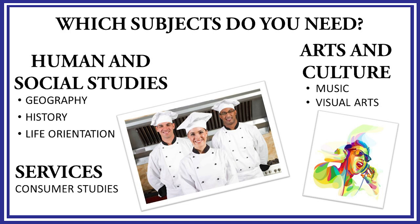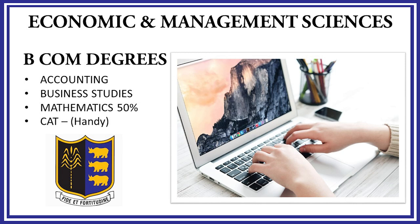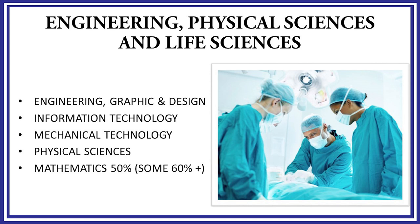Which subjects do you need for career choices offered at universities? For arts and culture you need Music and Visual Arts. For human and social studies you need Geography, History, and Life Orientation. For services you need Consumer Studies. For Economic and Management Sciences degrees you need Accounting, Business Studies, Mathematics, and CAT. For engineering and biological sciences you need EGD, Physical Sciences, Life Sciences, IT, Mechanical Technology, and Mathematics.